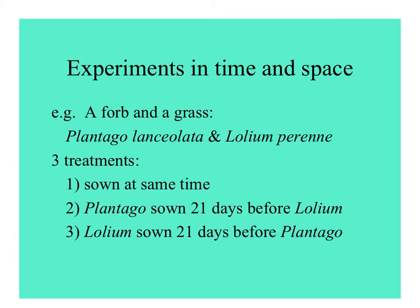There have been simple experiments to look at the effects of time and space. This competition was studied between a forb — a broad-leafed herb, Plantago lanceolata — and a grass, Lolium perenne. Three treatments were conducted: one in which seeds of both were sown at the same time, one in which Plantago was sown three weeks before Lolium, and one where Lolium was sown three weeks before Plantago.